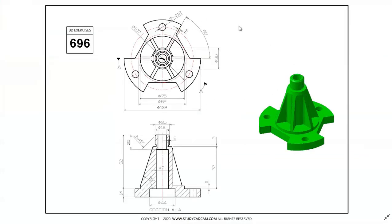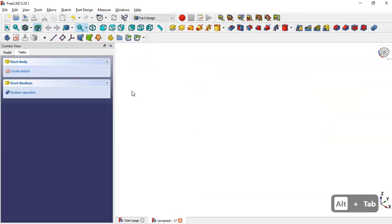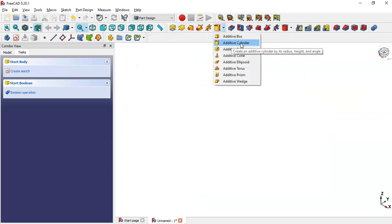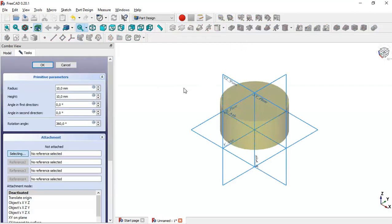Here we have this image view, and we have a top view and a section view with dimensions shown. First, we'll create a cylinder, and after that we'll create these pockets. We come back to the FreeCAD document, go to Additive Filters, and select Additive Cylinder.